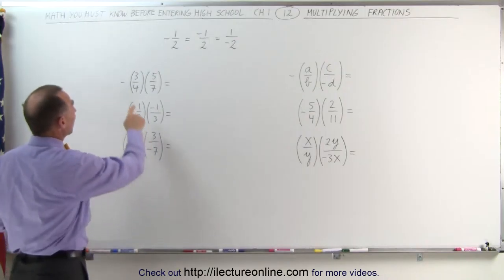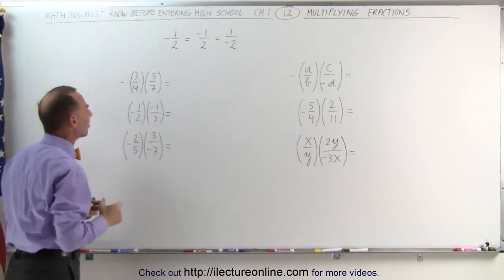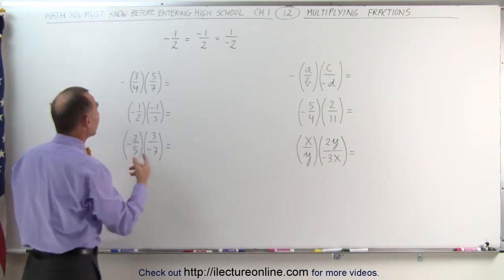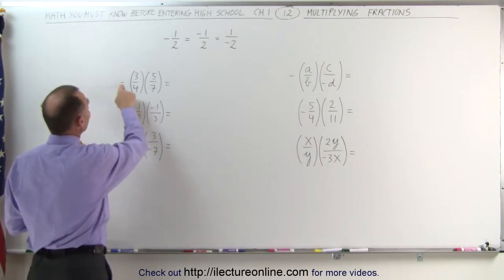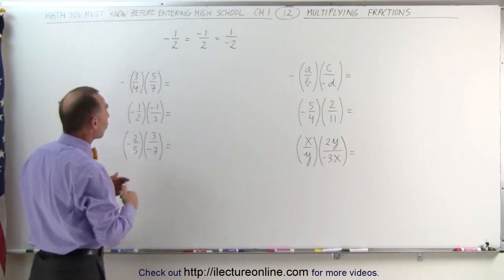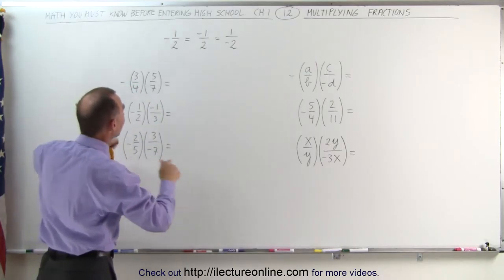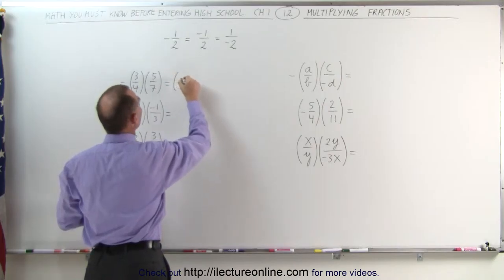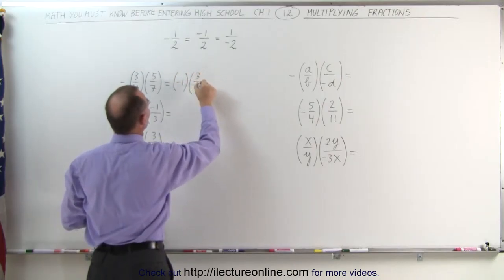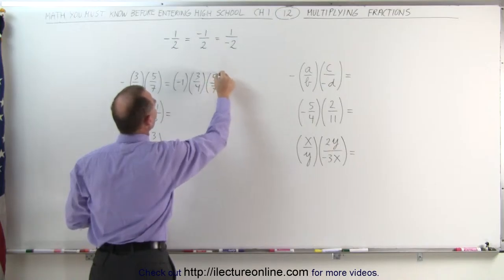Sometimes we have a negative sign in front of the parentheses, and we wonder what we need to do with that. You can take the negative sign and place it inside the parentheses, or you can think of this as being a negative 1. This can then be written as negative 1 multiplied times 3 over 4, and multiplied times 5 over 7.